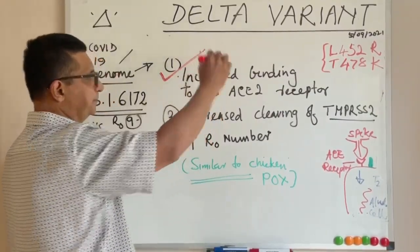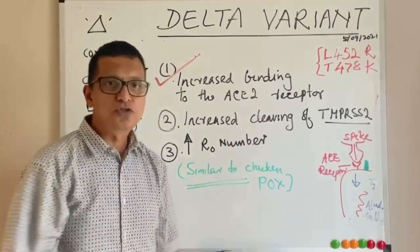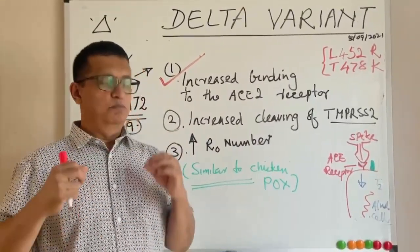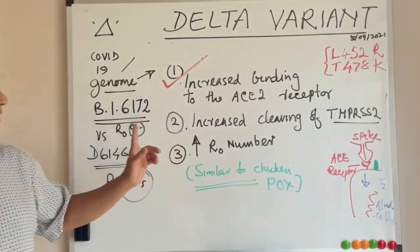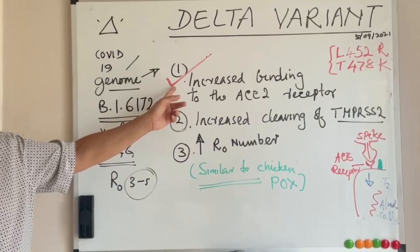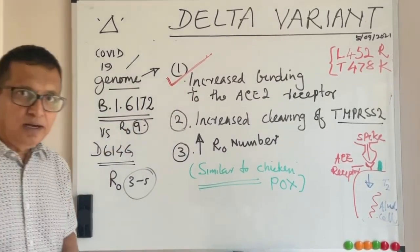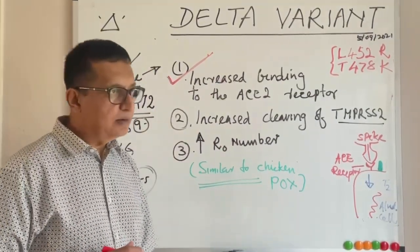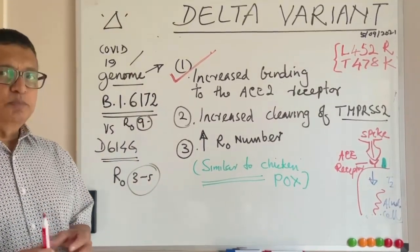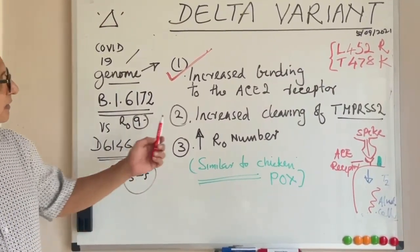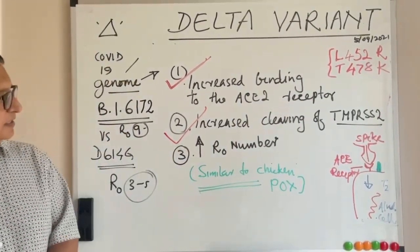In other words, the delta variant has increased affinity and the binding process is very quick, so more viruses enter the body more rapidly. This is what differentiates it from the original Wuhan version, the alpha variant, and other previously prevalent variants.